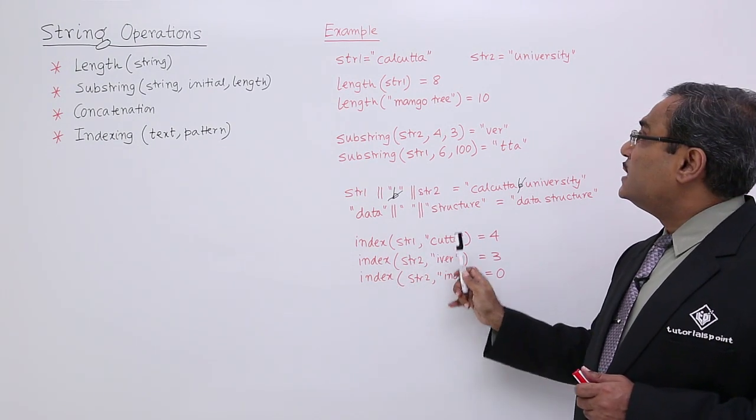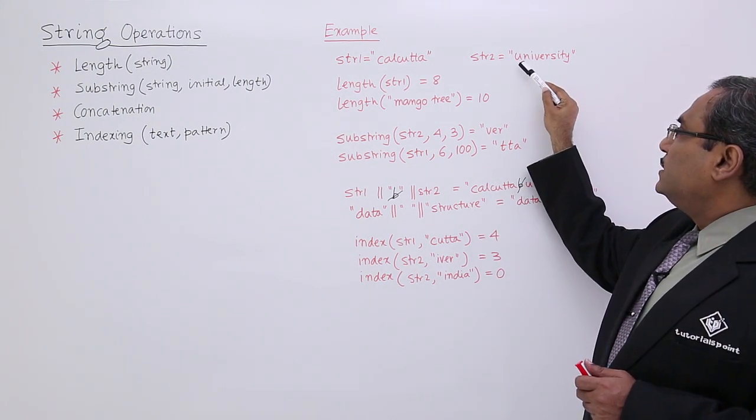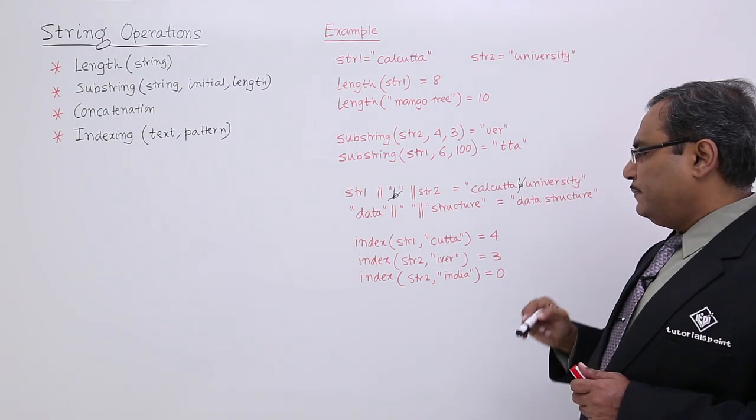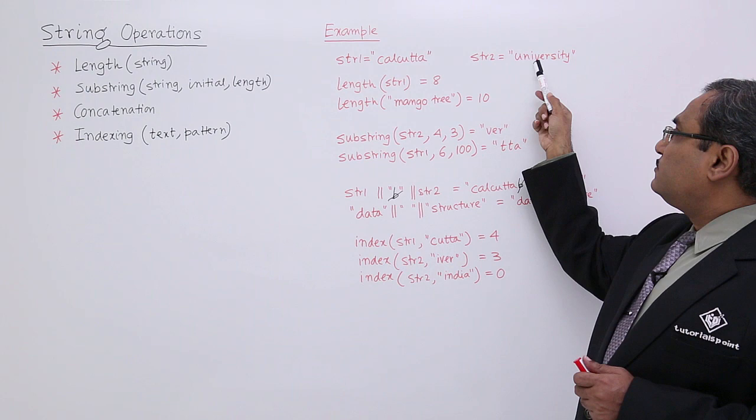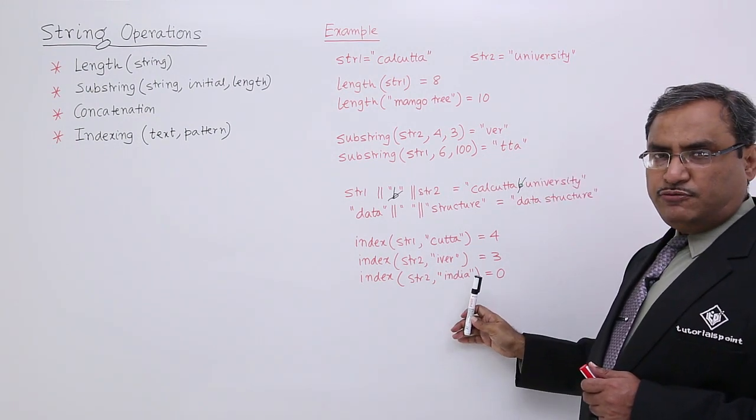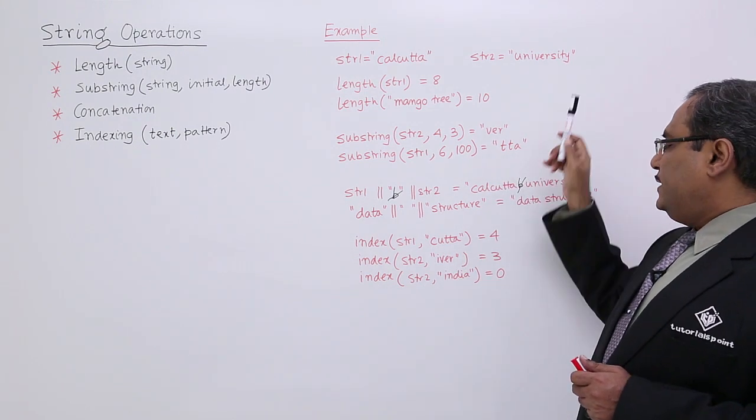Index STR2 IVER. STR2 IVER means this one, that is the third. 1, 2, 3. From the third place it is getting, so it is 3. But in case of STR2, if I try to find out or search India, as India is not present, it will give me 0.